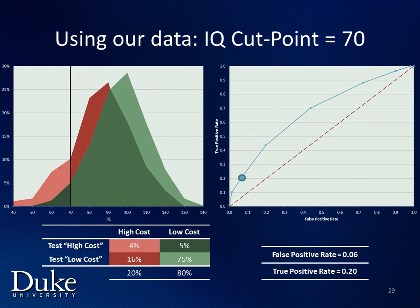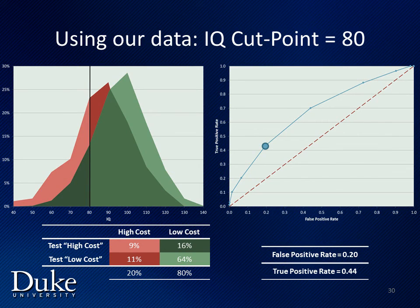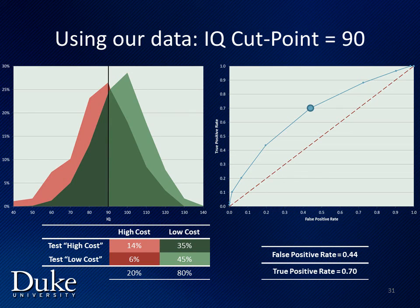Moving the cut point to IQ equals 70 improves our true positive rate to 0.2 and increases our false positive rate to 0.06. Moving the cut point to IQ equals 80 improves our true positive rate to 0.44 and increases our false positive rate to 0.2. Moving the cut point to IQ equals 90 improves our true positive rate again to 0.7 and increases our false positive rate to 0.44. The end result of this example, using only IQ to predict high cost versus low cost group membership, gives us an AUC of 0.7, meaning that for any two randomly selected high cost and low cost individuals, 70% of the time the high cost individual will have a lower IQ than the low cost individual.